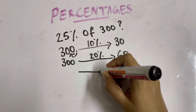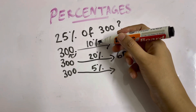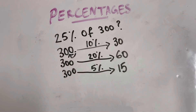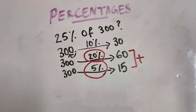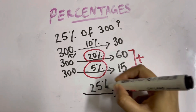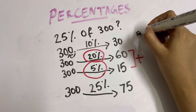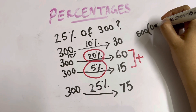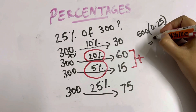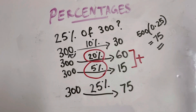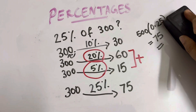Now find 5% of 300. 5% is just half of 10%, so half of 30 is 15. For 25%, we add 20% and 5%: 60 plus 15 is 75. Let's check in our calculators: 300 times 0.25 equals 75 — correct! We're solving these problems mentally and you're getting the hang of it.